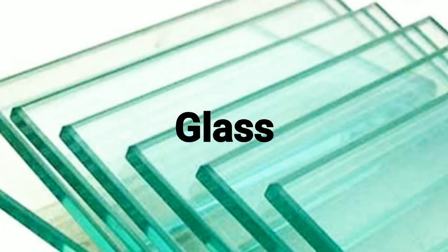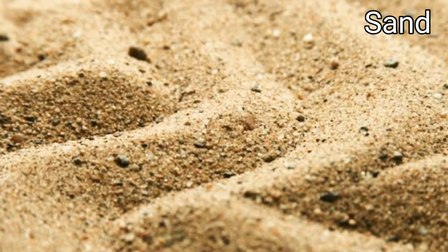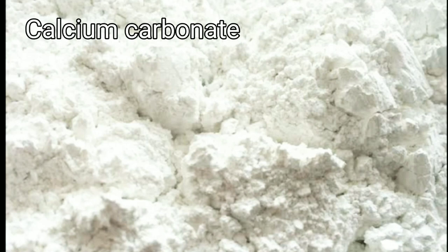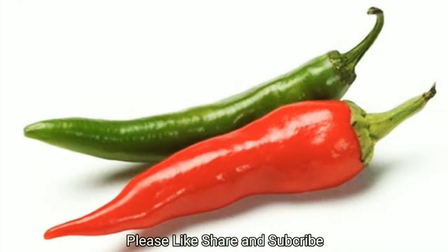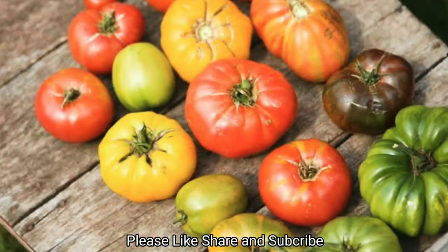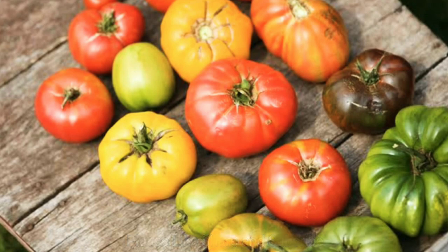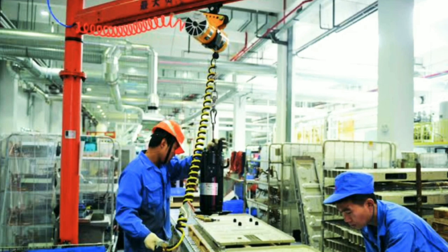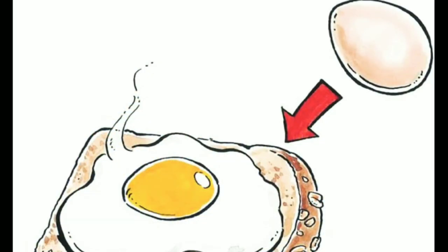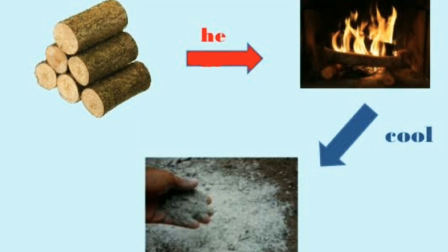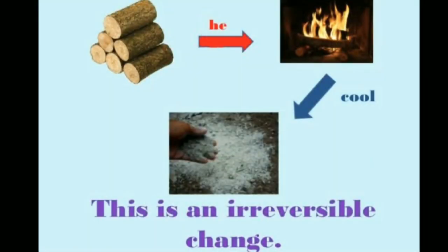Glass can be made from sand and calcium carbonate. However, sand and calcium carbonate cannot be obtained again from glass. Similarly, green chillies or tomatoes turn red after some time, but red tomatoes never become green again. While making man-made substances, the properties of the constituents undergo a change due to certain chemical reactions. These changes in properties are permanent — the original constituent substances cannot be obtained again from the new substances. Such changes are called irreversible changes.